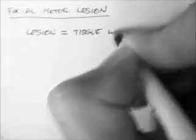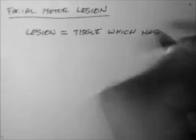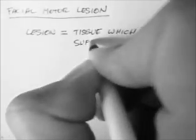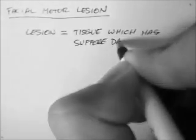Today I'm going to talk about facial motor lesions, specifically upper and lower motor lesions of the facial nucleus. First of all, I think I should define lesion. It's a term that gets thrown around, but it's a very general term which just means a tissue which has suffered damage through injury or disease.